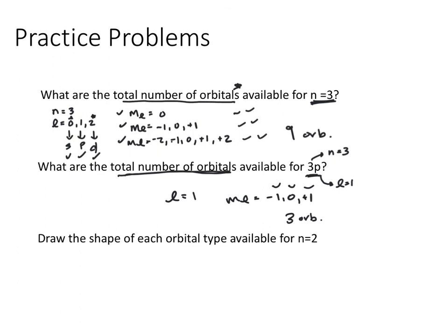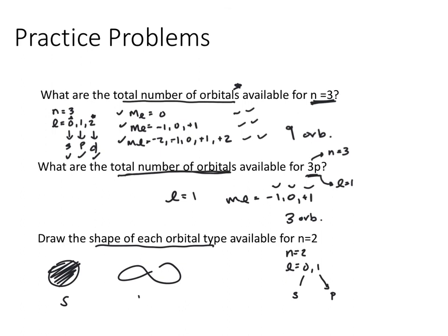For the last problem, N=2, we draw the shape of each orbital type. L goes from 0 to 1. L=0 corresponds to the S orbital — spherical in shape — and L=1 corresponds to the P orbital — dumbbell shaped. So we draw the S orbital and the three P orbitals for this energy level. These are our approaches to quantum numbers and their calculations.